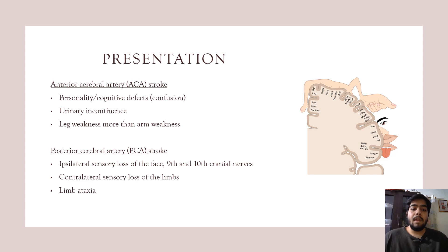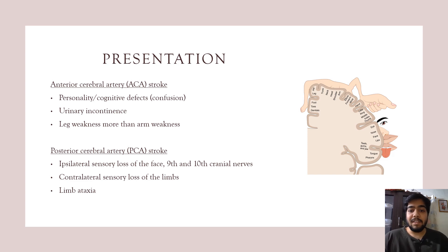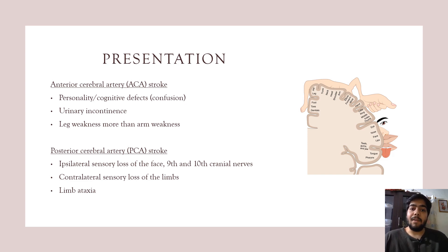If the anterior cerebral artery is involved, it can cause personality changes and cognitive defects, urinary incontinence, and leg weakness that is usually greater than arm weakness. This is because the anterior cerebral artery supplies the medial part of the cerebrum, and according to the homunculus, the medial part controls motor supply to the leg.